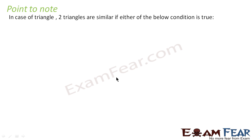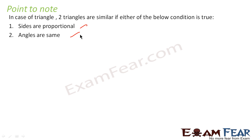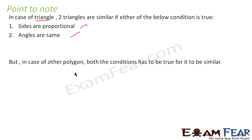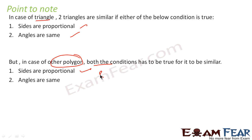There is an important point to note. In the case of triangles, two triangles are similar if either condition is true — that is, if sides are proportional OR angles are the same. Please note this is only in the case of triangles. In the case of any other polygon, both conditions have to be true: sides are proportional AND angles are the same. So for polygons it is 'and', but for triangles it is 'or'.